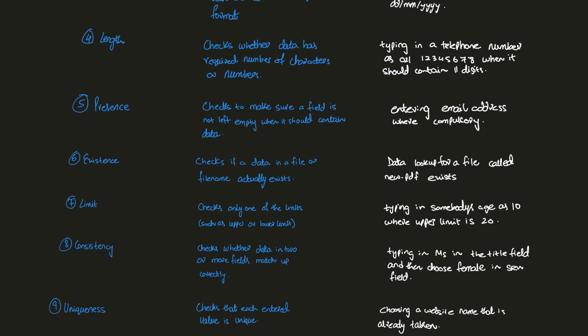Then we have uniqueness check. It checks that each value entered is unique. For example, if you want to design a website and the domain name you want is already taken, you cannot use the same domain name — it has to be unique. Choosing a website name that is already taken would fail the uniqueness check. You would need to either choose a different name or purchase the existing domain from its owner. Those are nine validation checks.